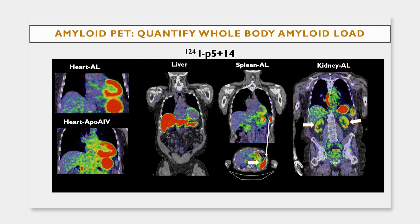As for the other tracer, these tracers can image not just AL but also APO A4, as you saw. This is a case of a transthyretin cardiac amyloid patient showing liver uptake. This tracer does not have physiological liver uptake, so this finding is pathological.